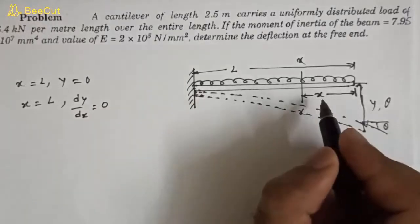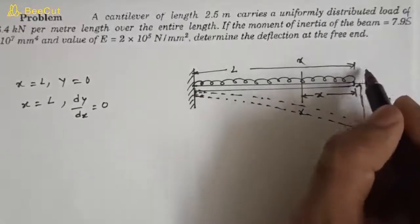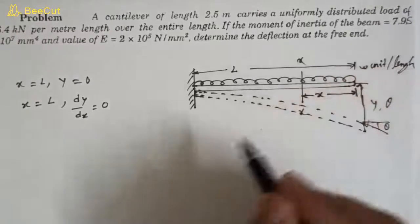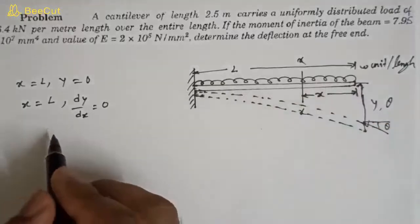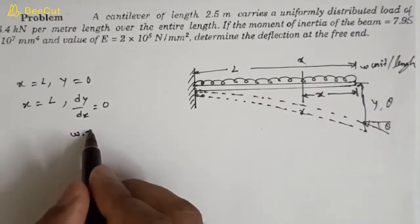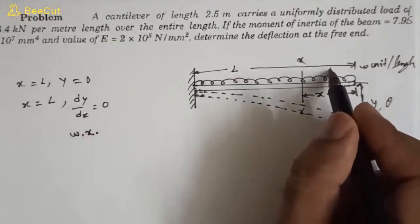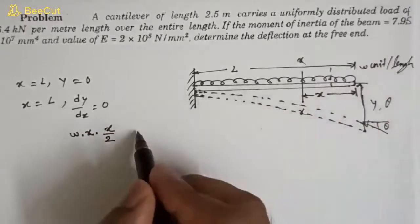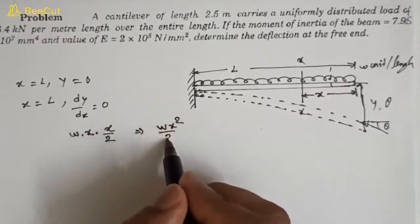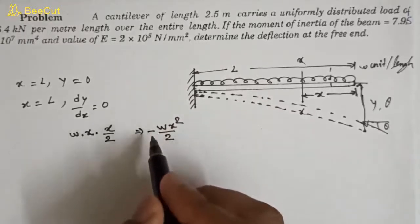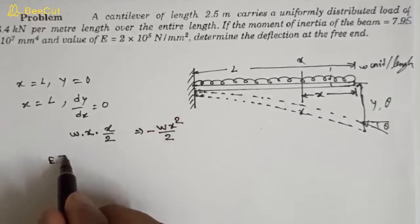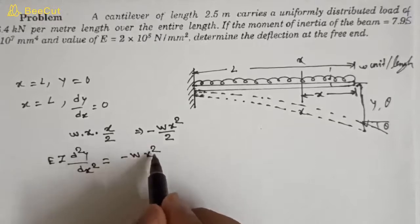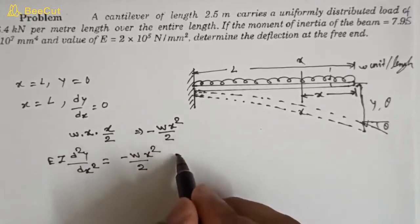Now let's find what will be the moment due to this uniformly distributed load w per unit length. If the load is w, we will have a moment due to this load: w × x is the load, and the distance of the centroid of this section is x/2 from this section. So the moment will be wx²/2, and it is a hogging moment, so it will be negative. Therefore: EI d²y/dx² = −wx²/2.